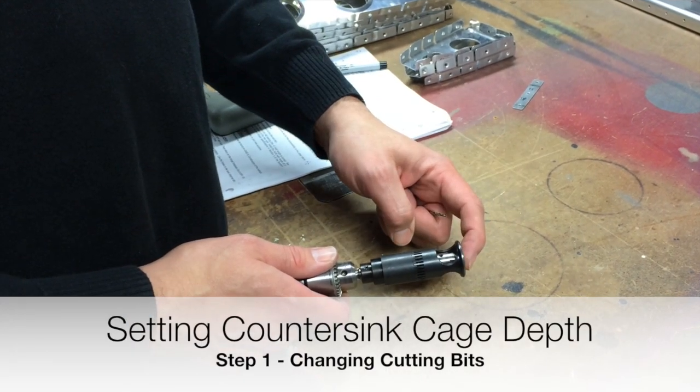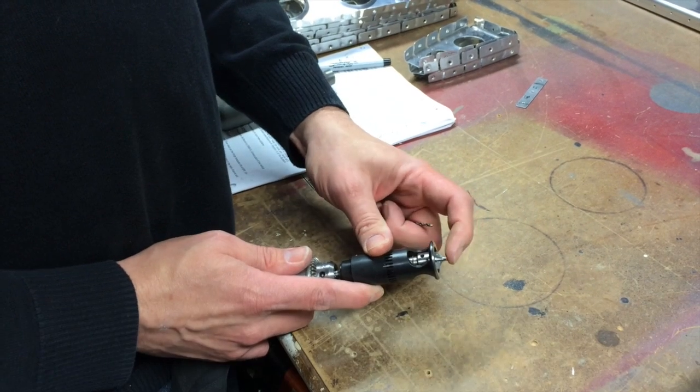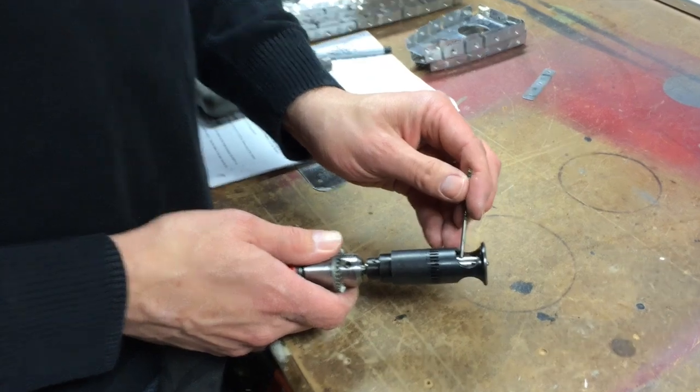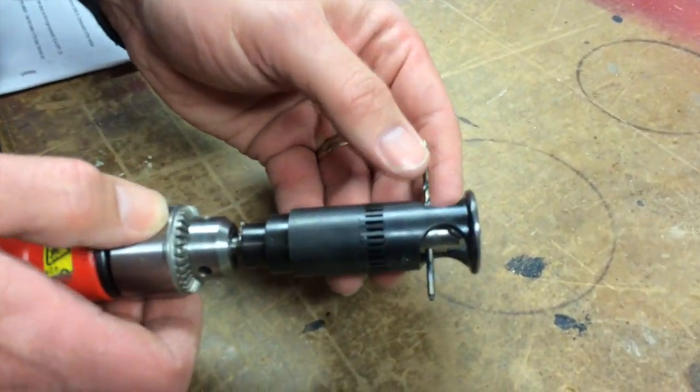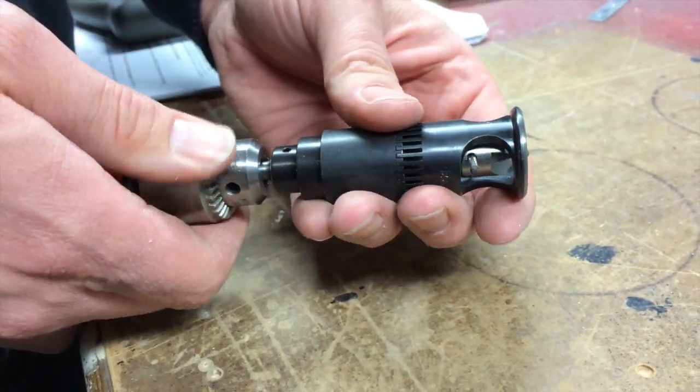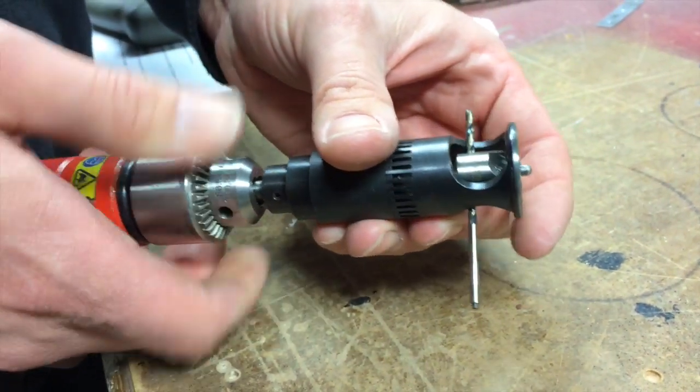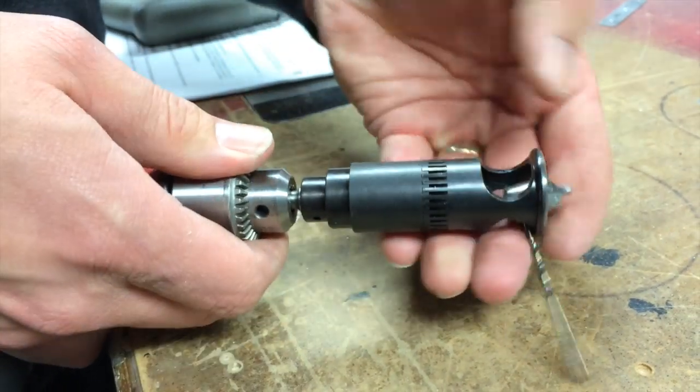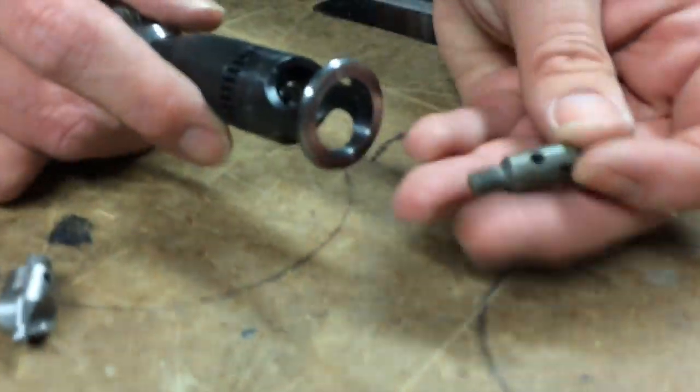Okay, I need to change the countersink cutter in here that has a number 30 pilot into the one that has a number 40 pilot. So the first thing I need to do is lock the pilot into the cage using the drill, and then I can rotate the drill chuck and have it thread out.